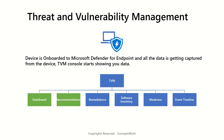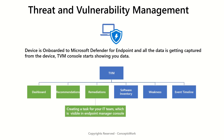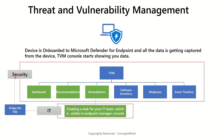The third one is remediation actions. This section helps you in creating a task for your IT team which is visible in the Endpoint Manager console, and this is the step that helps you bridge the gap between the IT and security team. Security analysts can initiate a remediation action based on the priority of the vulnerability, and the IT team can take respective actions in terms of remediating that vulnerability — for example, deploying a security patch.